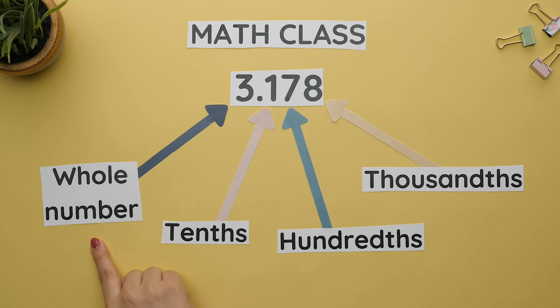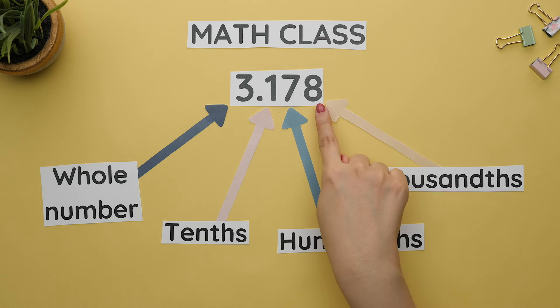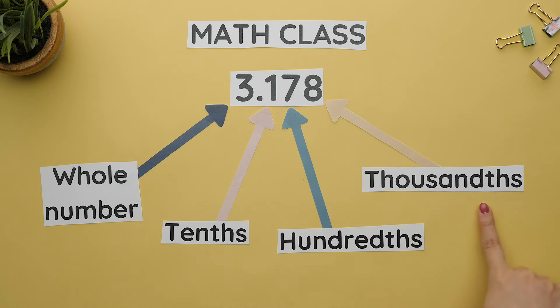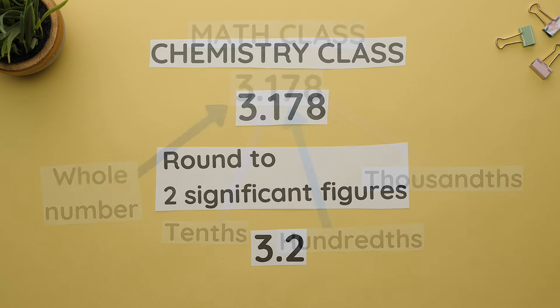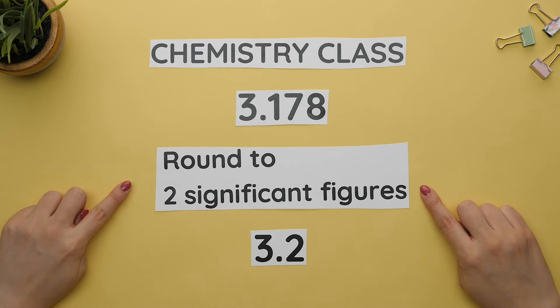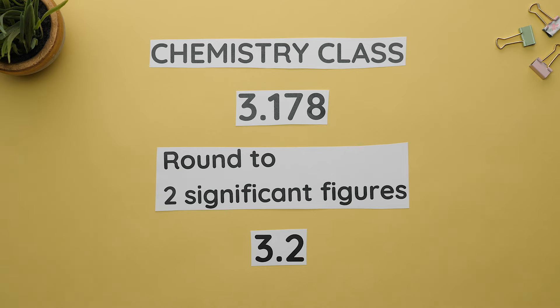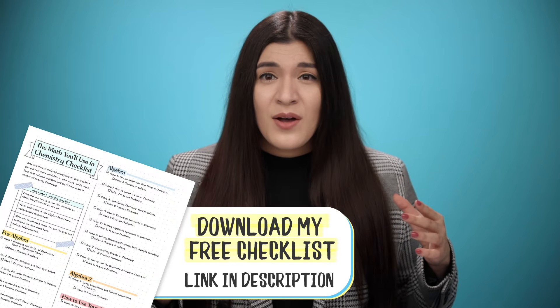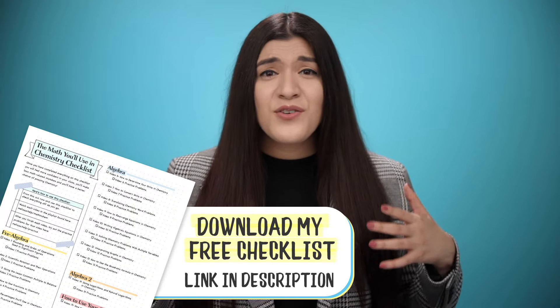In a math class, you would be asked to round to the nearest whole number or a specific decimal place like the tenths, hundredths, thousandths place, and so on. But in chemistry, you are asked to round to the appropriate number of significant figures, or sig figs. This is going to keep coming up all semester because your final answer for any chemistry problem has to have the correct number of significant figures.